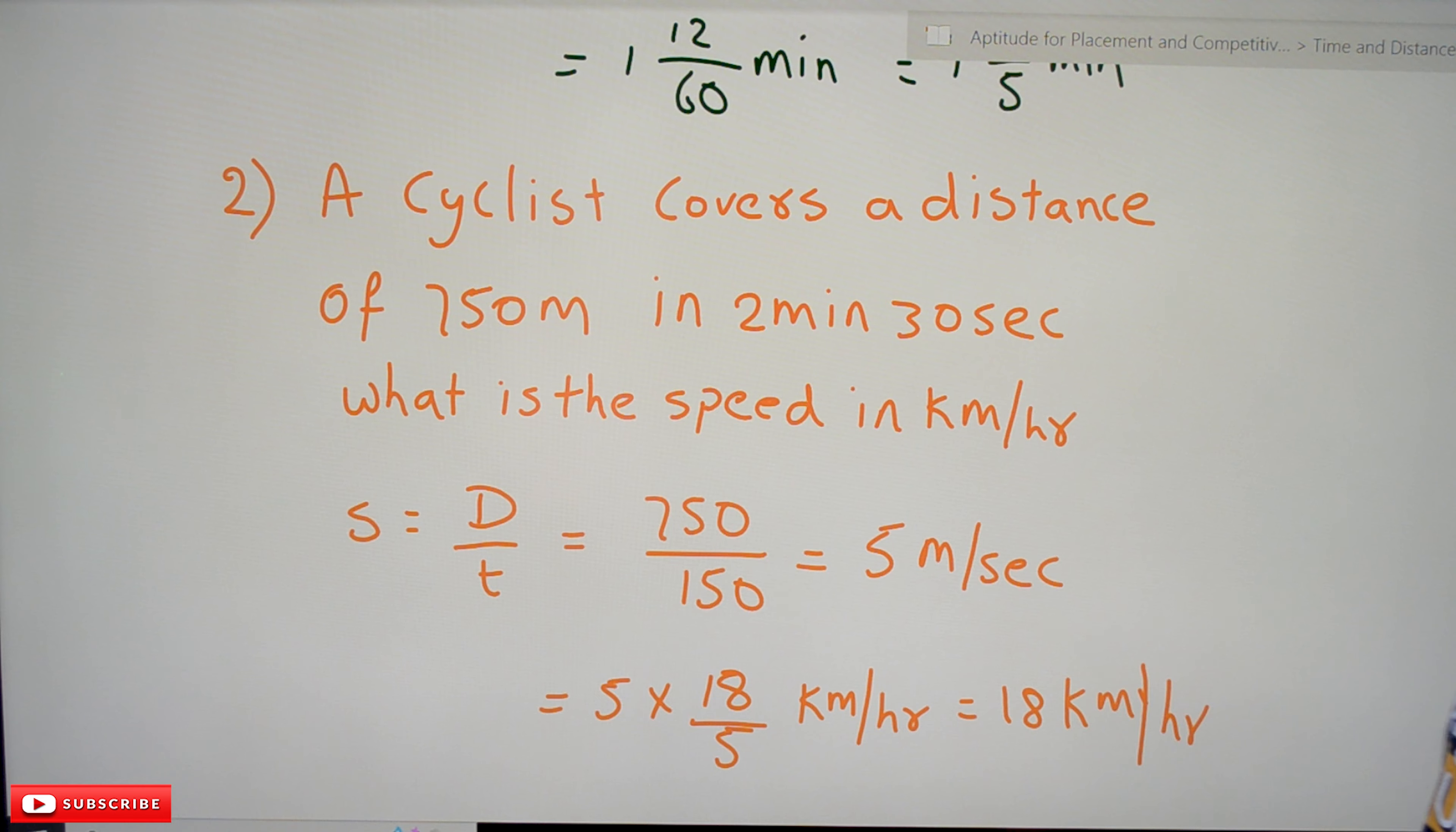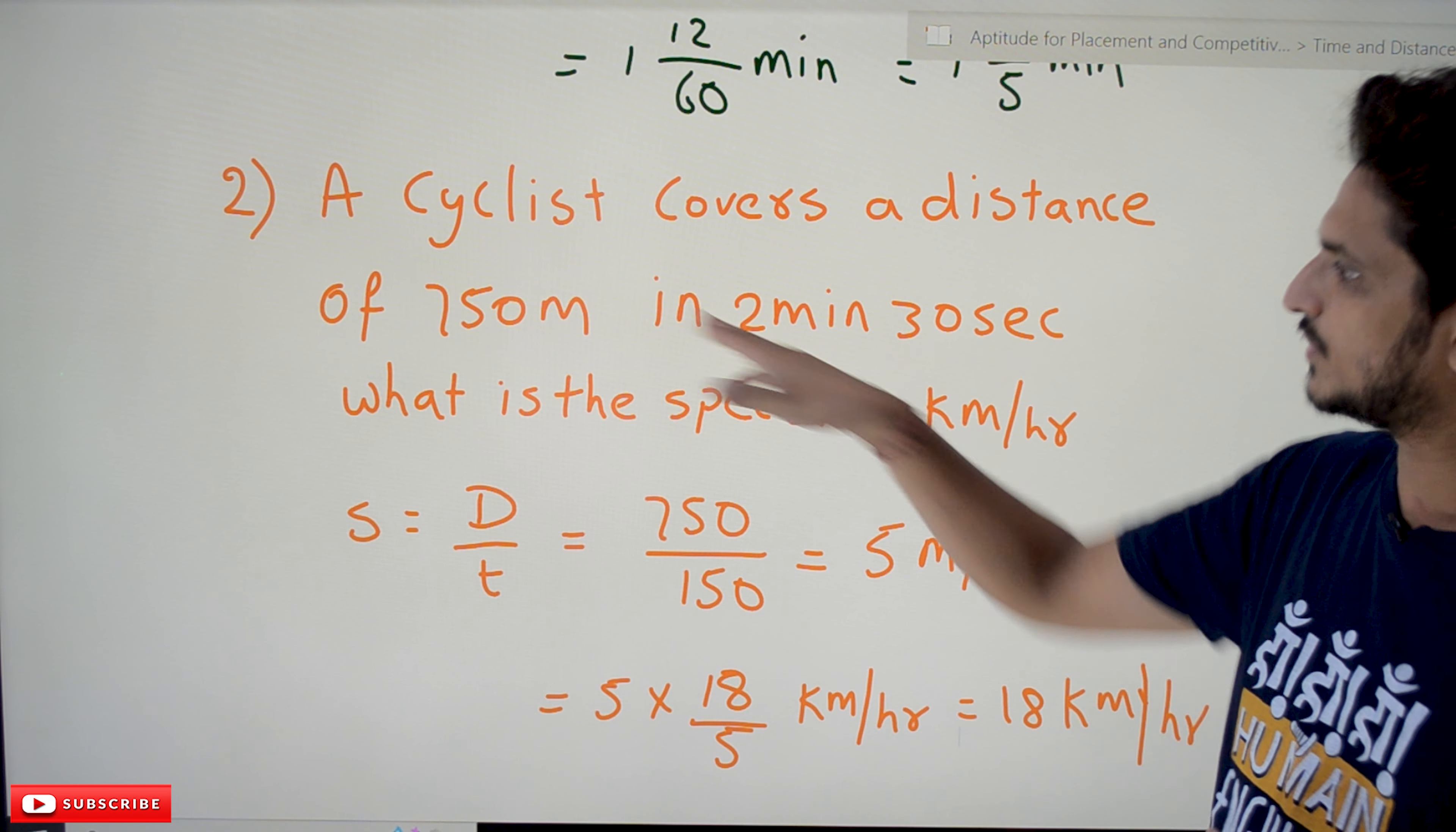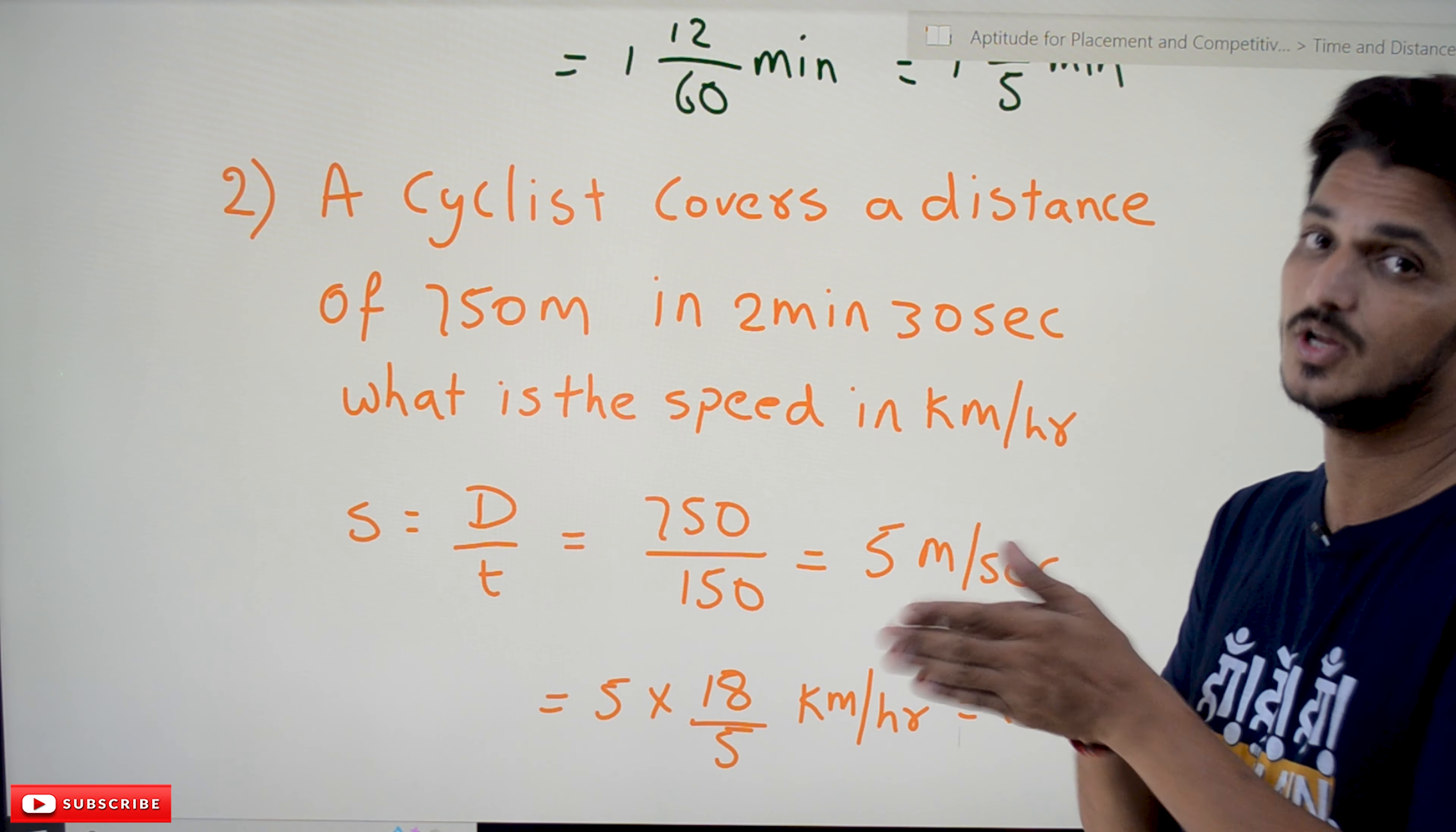Next example: A cyclist covers a distance of 750 meters in 2 minutes 30 seconds. So 2 minutes 30 seconds means 150 seconds. Distance is given in meters, time is given in seconds. What is the speed in kilometers per hour?